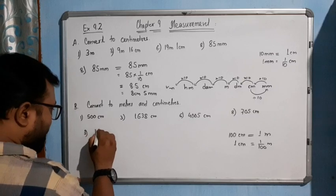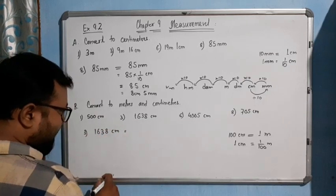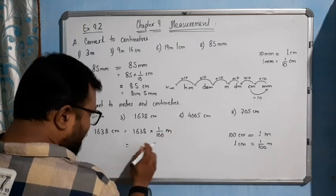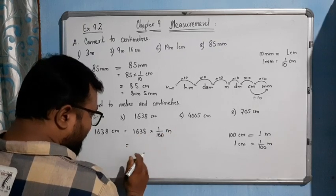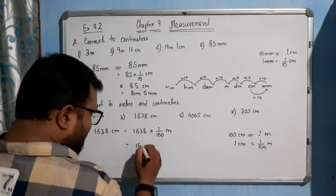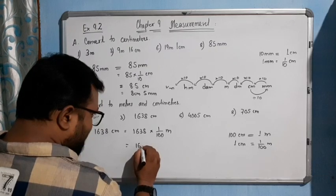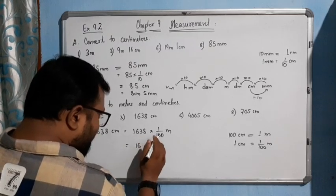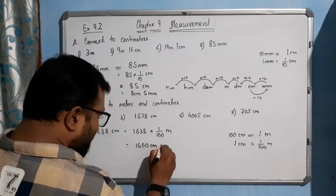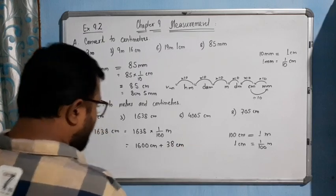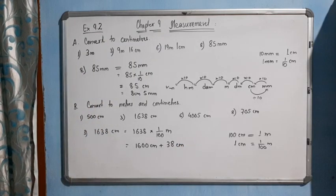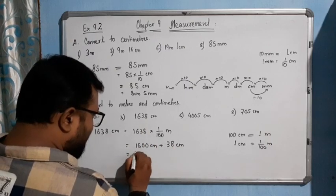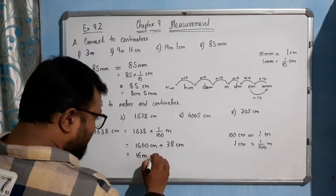For the second one: 1638 centimeters. We can split this as 1600 centimeters plus 38 centimeters. 1600 centimeters equals 16 meters, plus 38 centimeters remaining. So 1638 centimeters equals 16 meters and 38 centimeters.